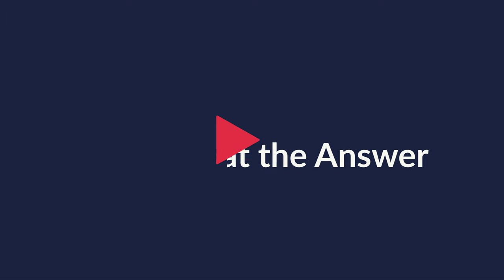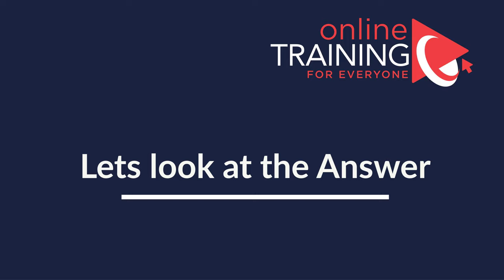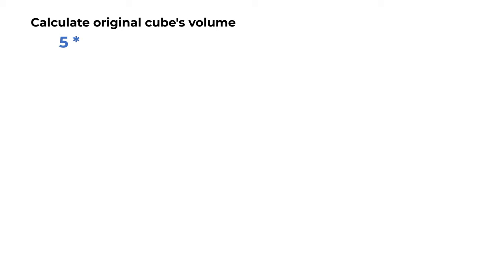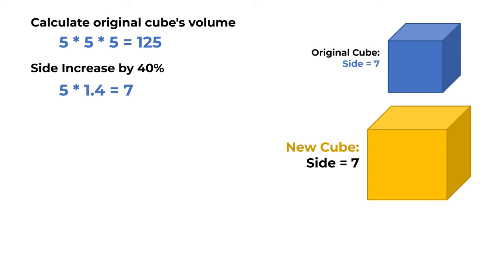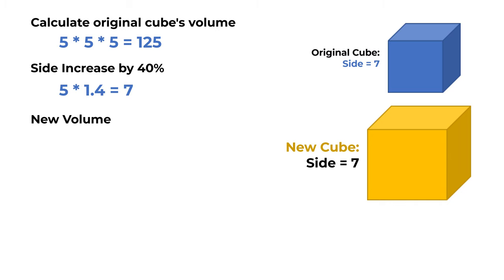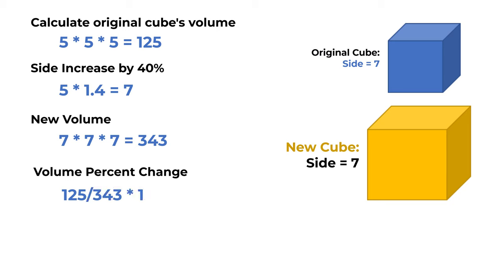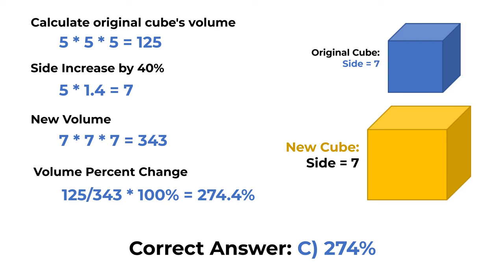First, calculate the original cube volume: 5 × 5 × 5 = 125. Now increase the side by 40%: 5 × 1.4 = 7, so the new cube has side 7. The new volume is 7 × 7 × 7 = 343. To calculate the percentage change, divide 343 by 125 and multiply by 100%, giving 274%. The correct choice is C, 274 percent.